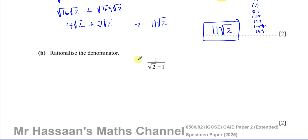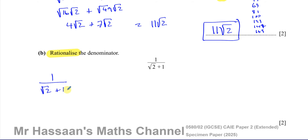Now part B is asking us to rationalize the denominator. A number written as a square root of a non-square, like √2, is called irrational because you cannot write it as a fraction with exact integer values. The denominator of this fraction is irrational — they want us to make it rational. We have 1 over (√2 + 1) and we must change it so the denominator is rationalized, while keeping its value the same as the original fraction.